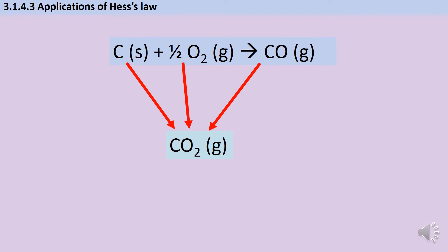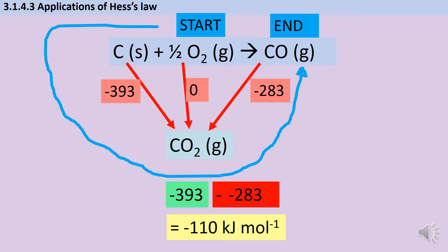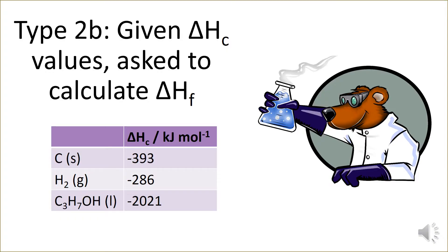Strictly speaking these aren't proper chemical equations because I should be adding more oxygen, but it doesn't really matter because the cycle is just to help me do the maths. Combusting carbon has a value of minus 393; combusting oxygen doesn't have a value because it's just oxygen; and carbon monoxide gives minus 283. I write 'start' and 'end' and draw the linking arrow. I'm going the right way along the carbon arrow — minus 393 — and the wrong way up the carbon monoxide arrow, so: minus minus 283. That gives an overall standard enthalpy of formation of carbon monoxide of minus 110 kJ/mol.